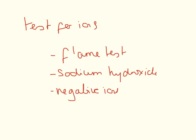Tests for ions — these come up all of the time. There are a number of different tests you need to know for the positive ions and the negative ions. These questions can be tricky, because they're not just going to ask you what colour it goes when you burn potassium. They're going to give you a compound, give you a situation, and ask you to describe the tests that could be carried out to identify what's in it. So there's a bit of logical thinking, thinking outside the box that you need to do here, but you have to know your tests for ions. These are really important.